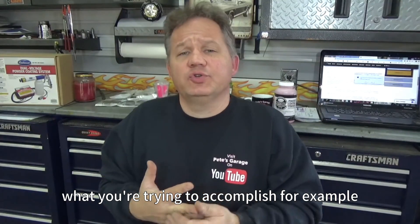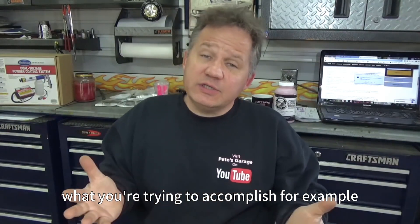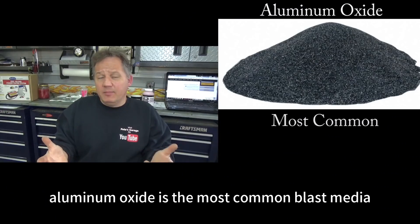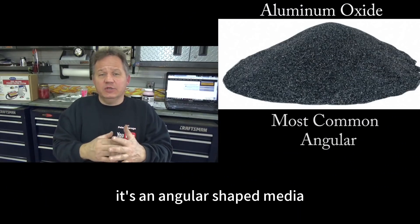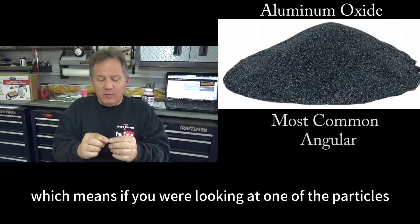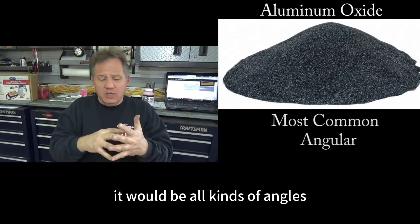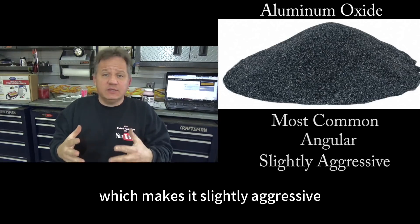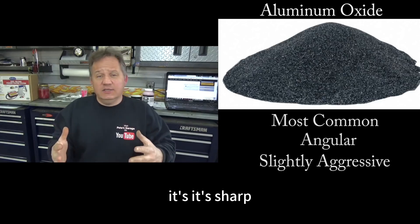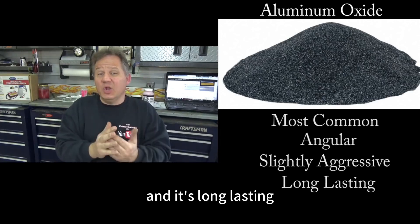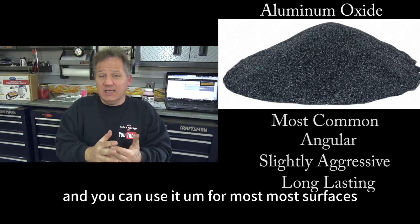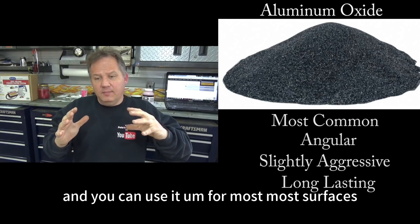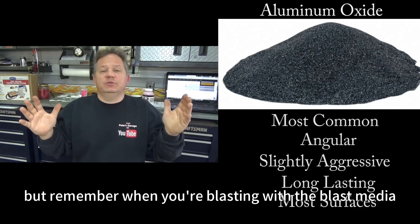Aluminum oxide is the most common blast media. It's an angular shaped media, which means if you were looking at one of the particles, it would be all kinds of angles — sharper angles — which makes it slightly aggressive. Since it's aggressive, it's sharp and it's long lasting, and you can use it for most surfaces.